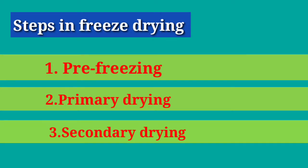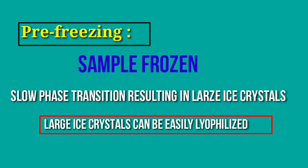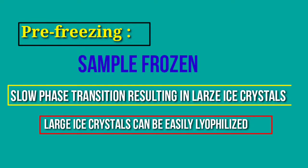Let us start with pre-freezing, which is an important step. During this process the sample gets frozen — this is a low phase transition, resulting in large ice crystals. The liquid to solid transition is made to take place slowly in a controlled manner, so that large ice crystals can be formed which can be easily lyophilized during the process.